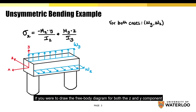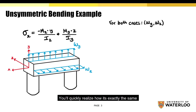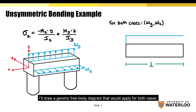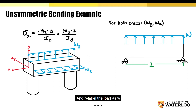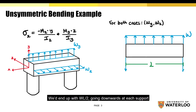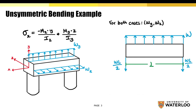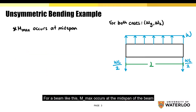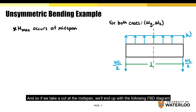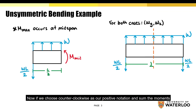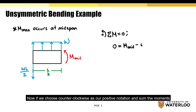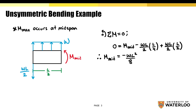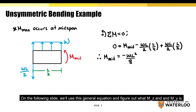If you were to draw the free body diagram for both the z and y components, you'll quickly realize they are exactly the same. To save time, I'll draw a generic free body diagram that applies for both cases and relabel the load as W. Now we'll solve for the reaction forces at the supports. If you sum the forces in the vertical direction, we end up with WL divided by 2 going downwards at each support. Since the beam is simply supported, Mmax occurs at the mid-span. If we take a cut at the mid-span and choose counterclockwise as positive and sum the moments, we'll end up with the moment equation at the mid-span.